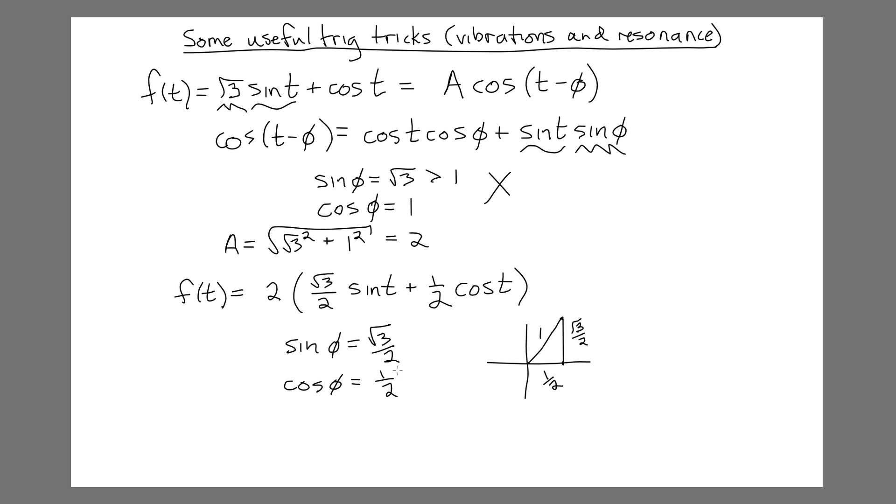Now if either of these were negative, we would go either in the negative direction, if it was the cosine that was negative, because cosine is the x coordinate on the unit circle, or if the sine was negative, we would go negative in the y direction, because the sine of phi is the y coordinate on the unit circle. But here I've chosen a simple example, where they're both plus, so we're in the first quadrant.